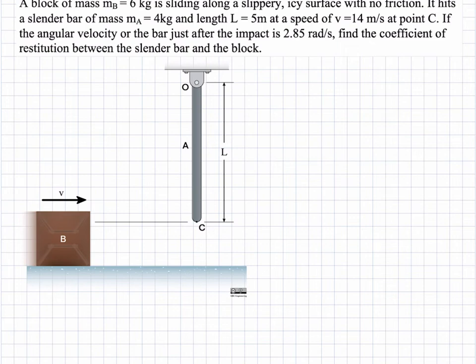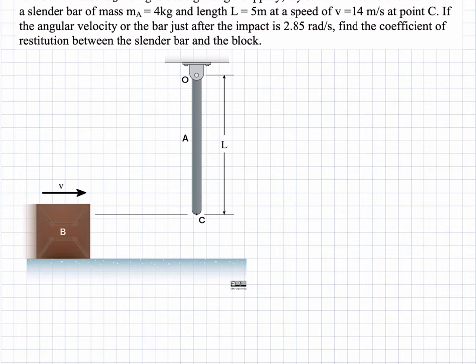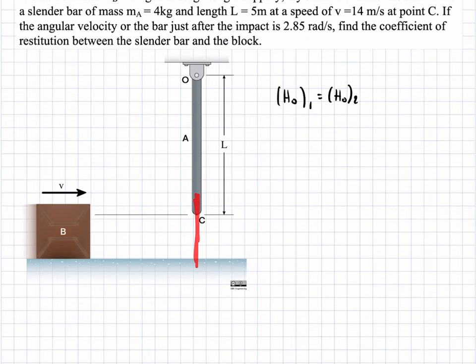We're going to apply conservation of angular momentum about point O, which is the top point and the point about which the slender rod rotates. We set HO1 equal to HO2, where state one is defined as right before impact — the block is approaching but hasn't contacted yet.